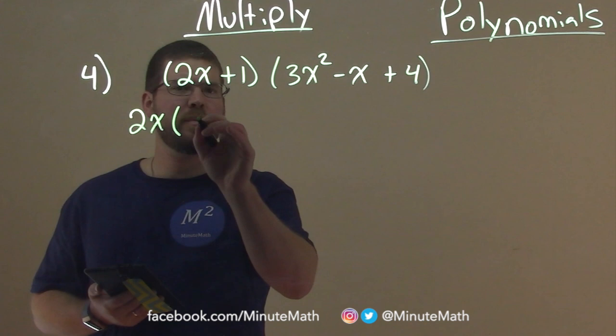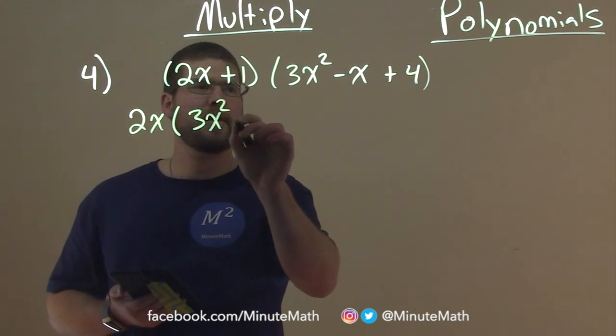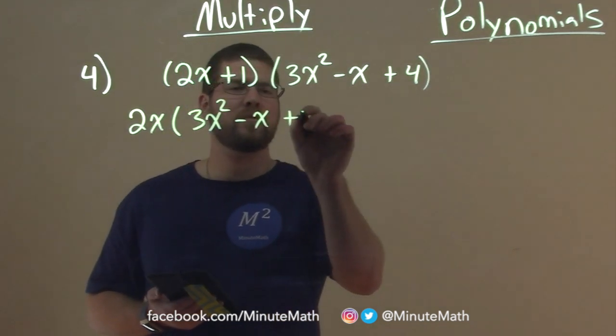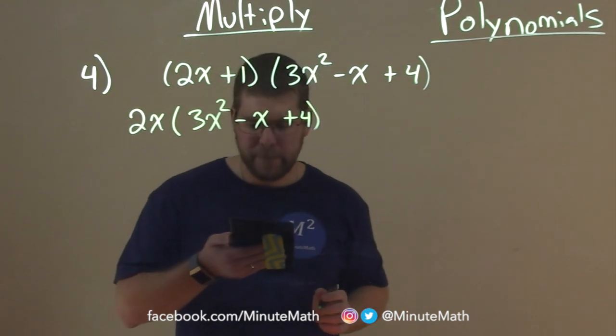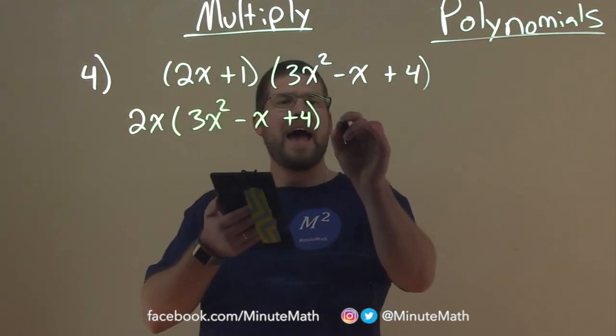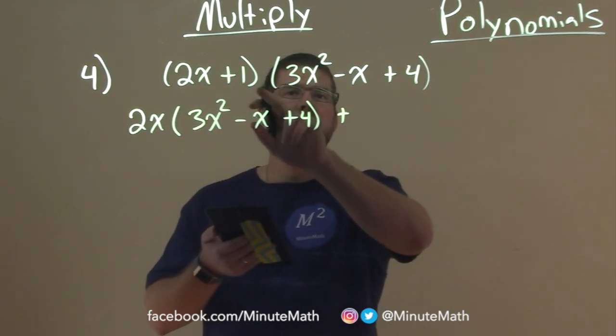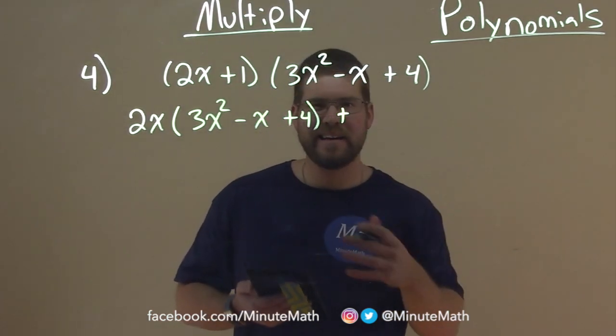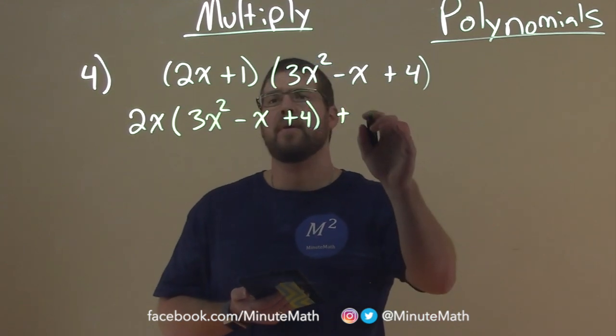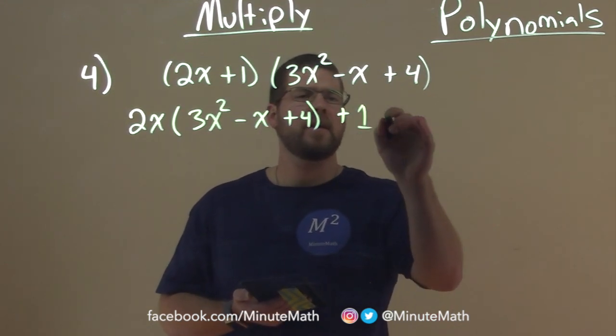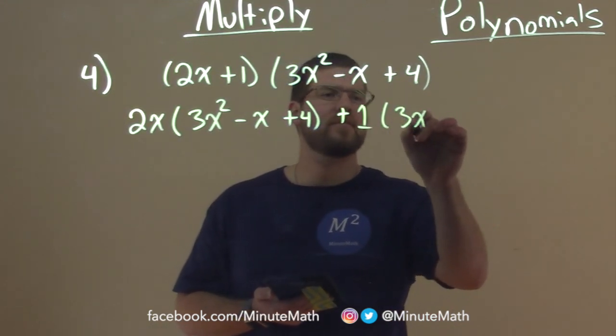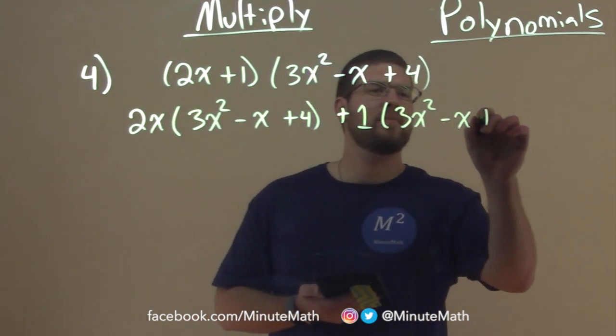2x times 3x squared minus x plus 4. Then we want to add, addition right here, and we distribute the 1 to all parts of the second expression, the second polynomial. So we have 1 here, times 3x squared minus x plus 4.